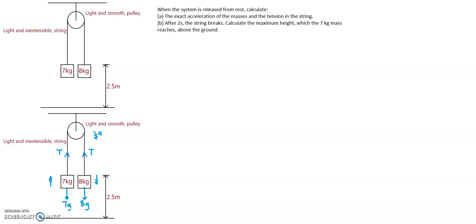So for part A, for the 8 kg mass, by resolving vertically downwards — hence the single arrow — because the 8 kilogram mass is going downwards, we have 8g acting downwards, take away the tension in the string acting upwards, will equal the mass times the acceleration. This will be denoted as equation 1.